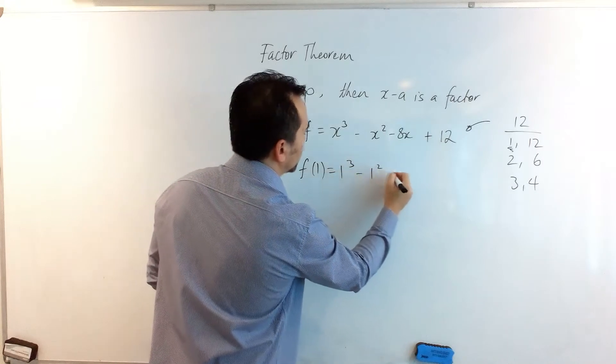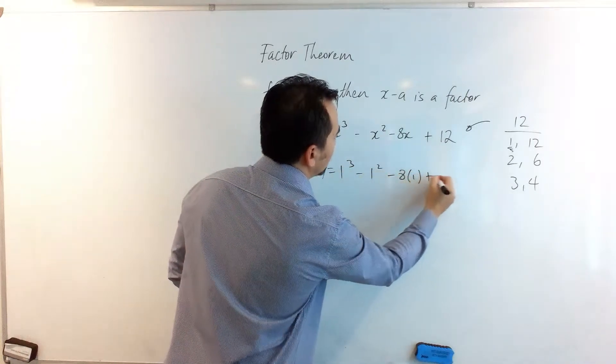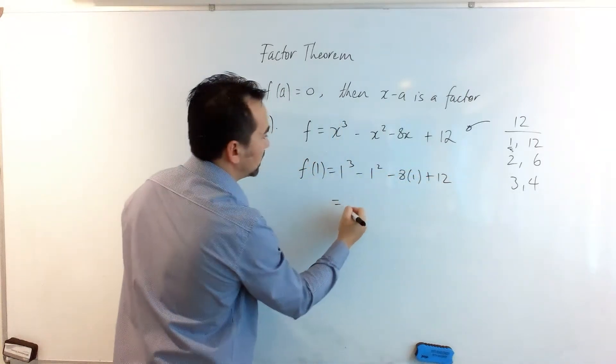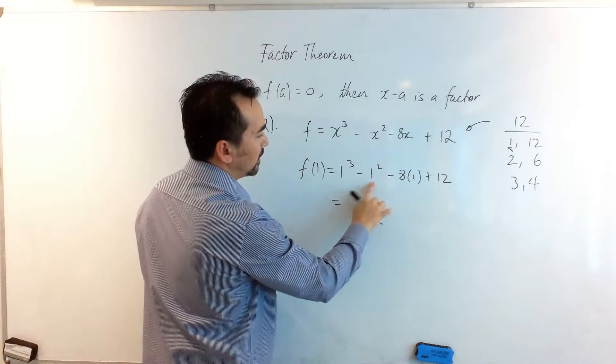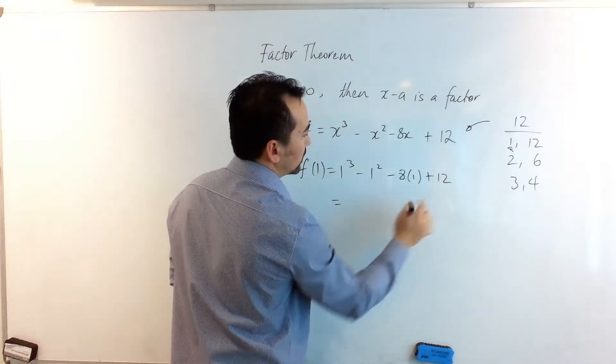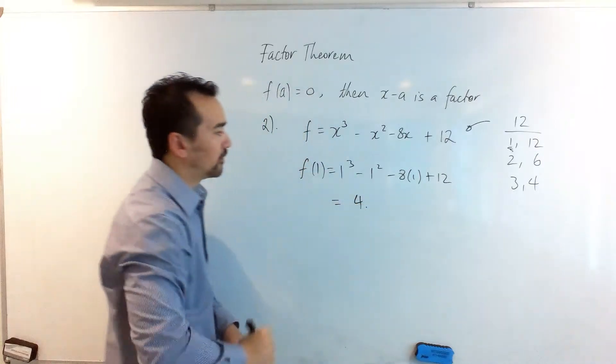1³ - 1² - 8(1) + 12 comes out to be 1 - 1—they cancel—negative 8 plus 12 comes out to be positive 4.